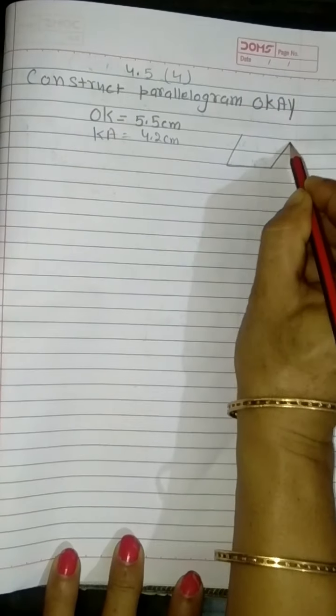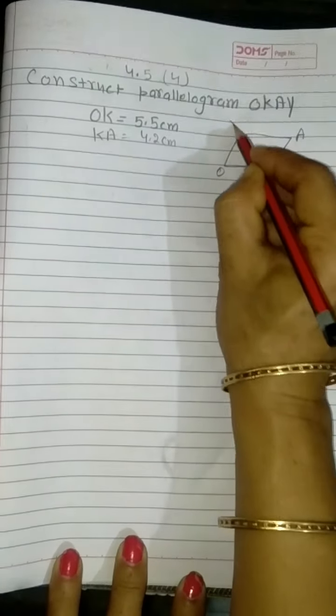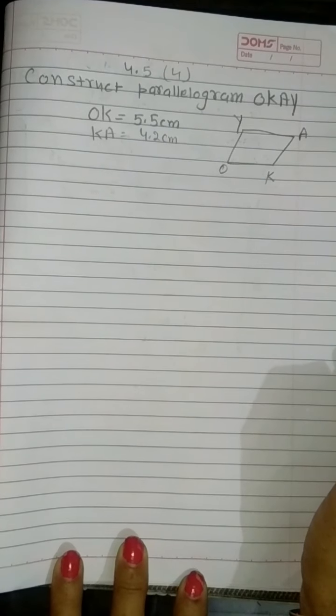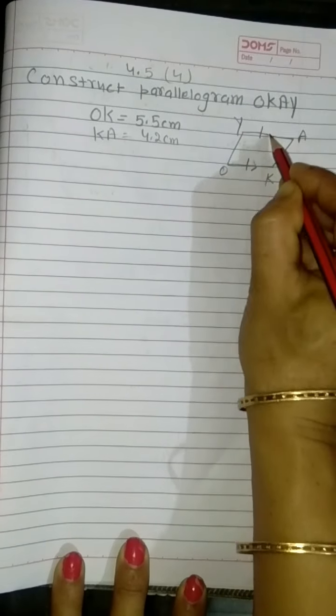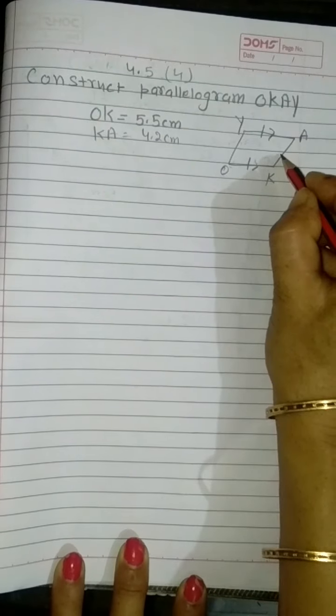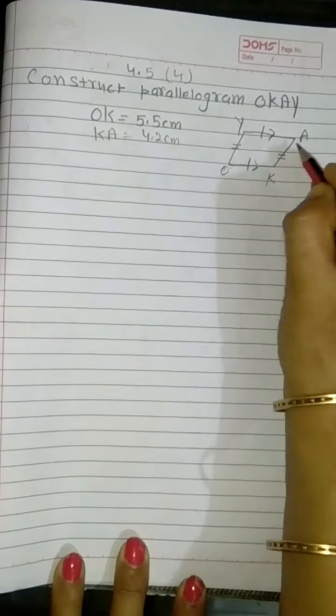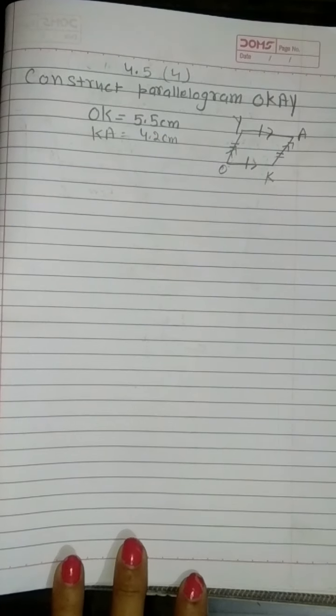Suppose I have drawn here a rough figure OKAY. And you know that in a parallelogram, opposite sides are equal and also parallel. So OK will be equal and parallel to YA, and KA will be equal and parallel to OY.